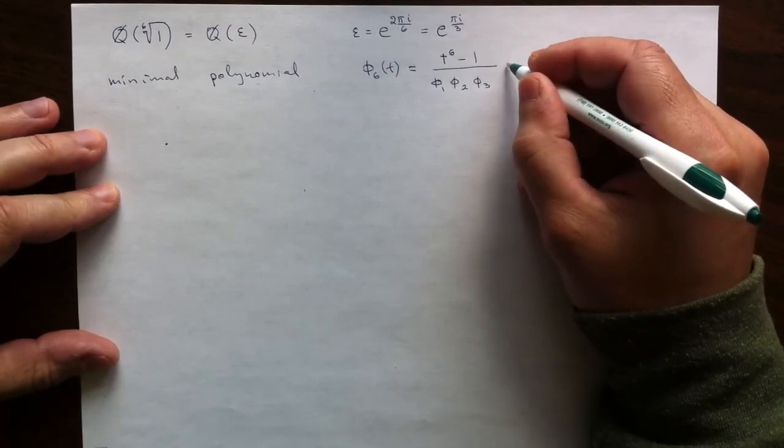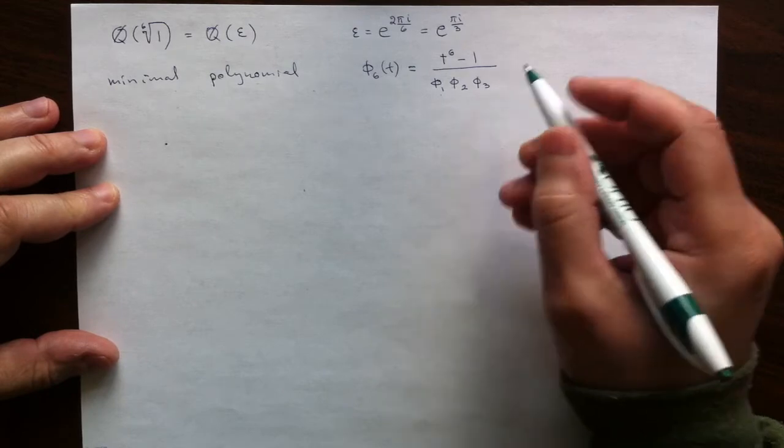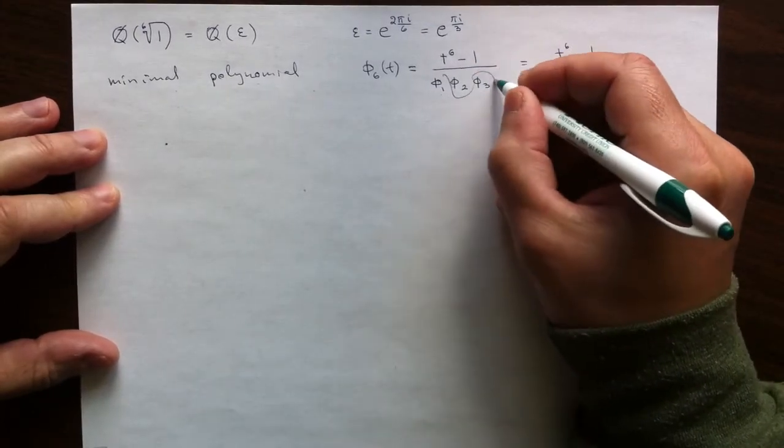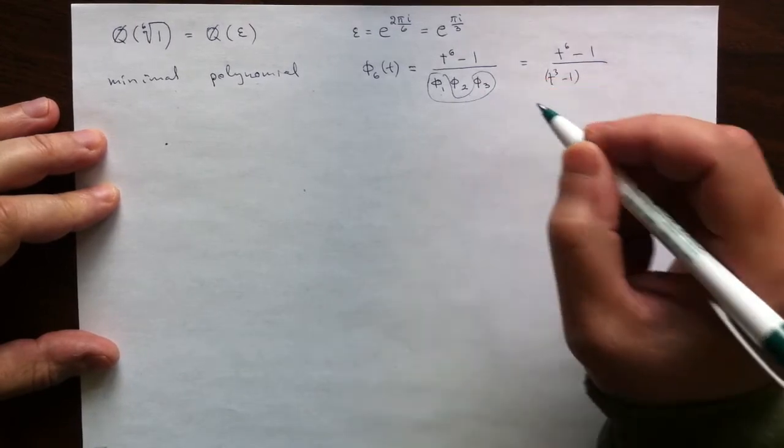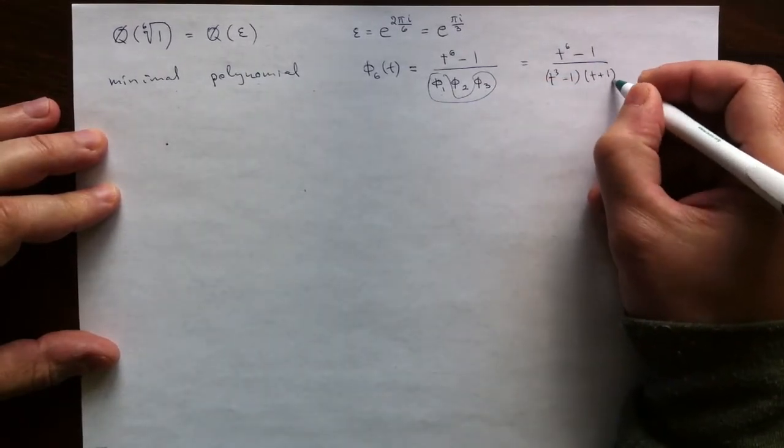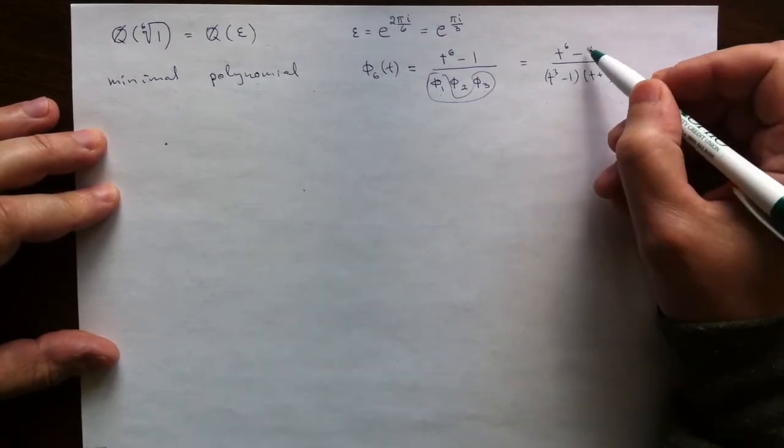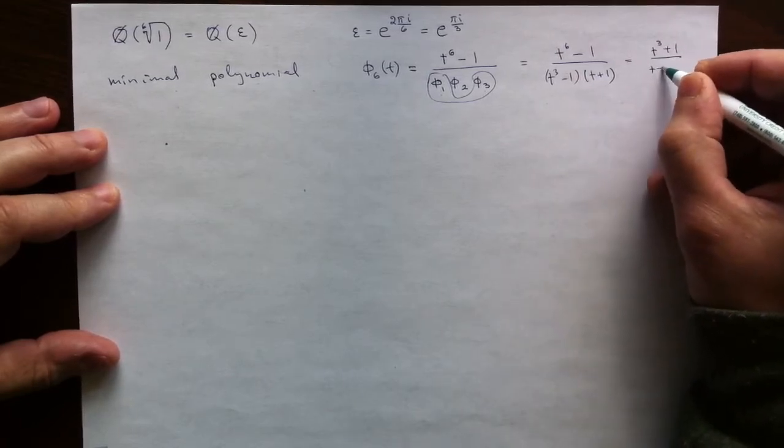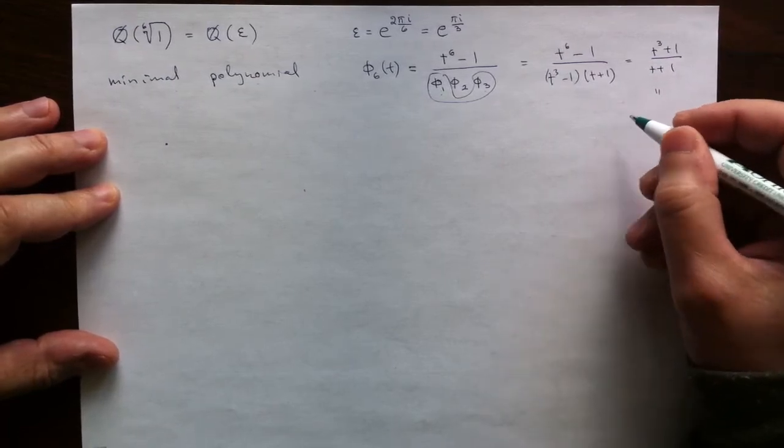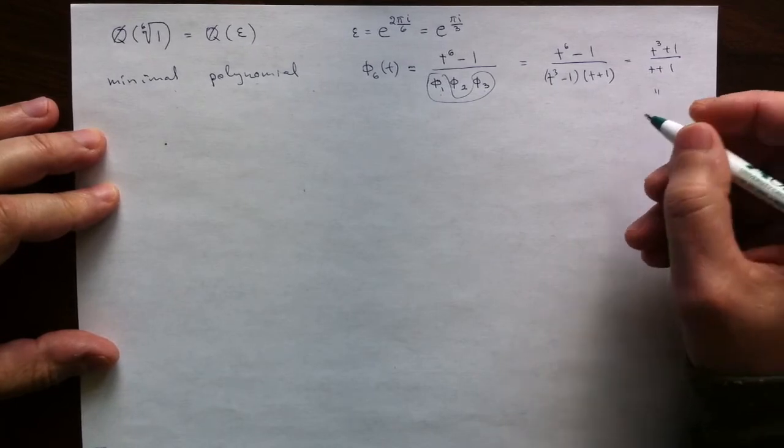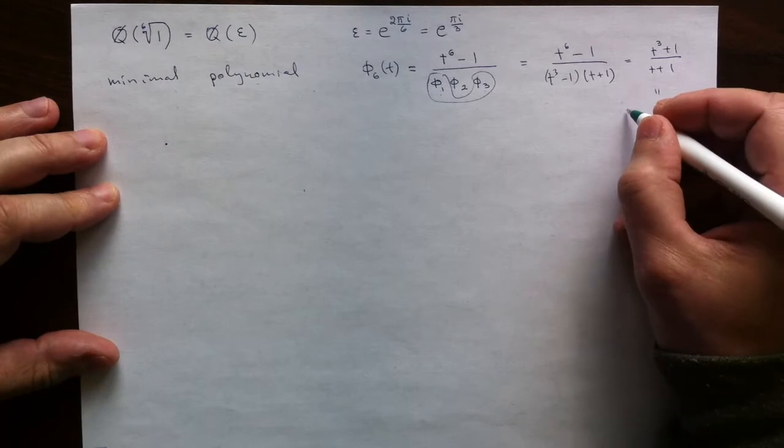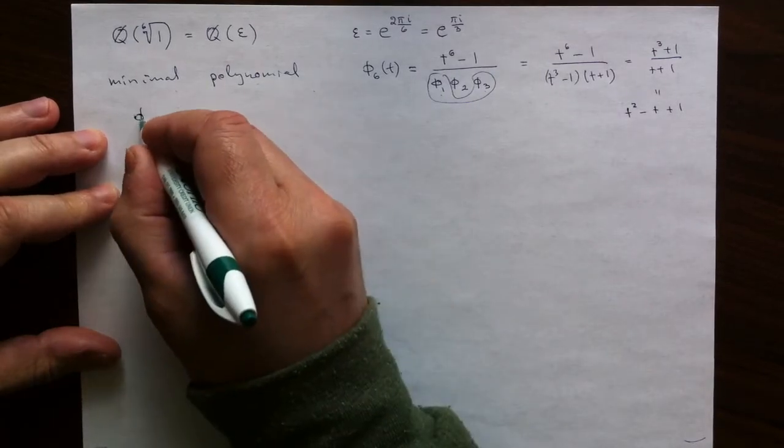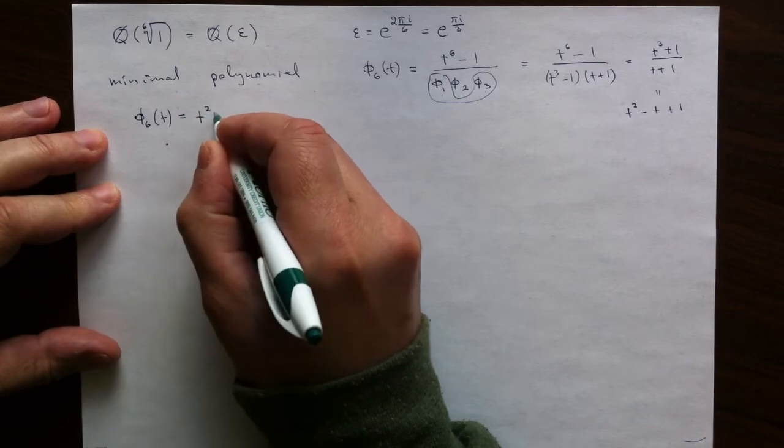And if we remember what they are, so this together with this will give us t to the, again this together with this will give us t cube minus 1. And then the second is t plus 1. So dividing this factor into the numerator will leave us with t cube plus 1. And then doing this division, we could again use a form of geometric progression and get t squared minus t plus 1. So that is explicitly the minimal polynomial, the cyclotomic polynomial level 6.